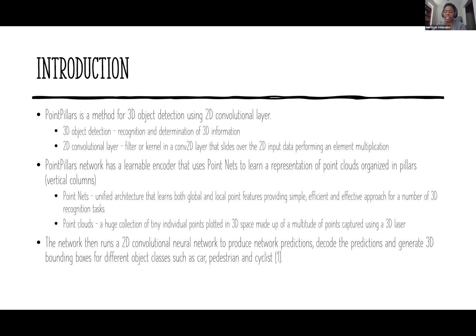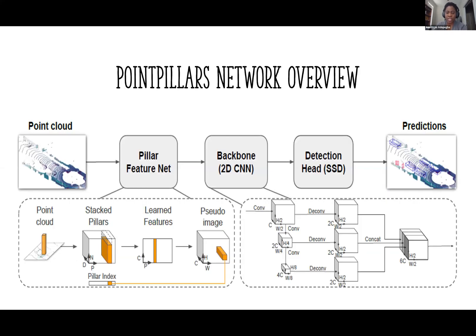The PointPillar network runs a 2D convolutional neural network to produce predictions, decodes those predictions, and generates 3D bounding boxes for different object classes such as cars, pedestrians, and cyclists. The network starts with a point cloud, passes through the PointPillar feature network, then through the backbone — the 2D CNN — then through the detection head, and gives the prediction.